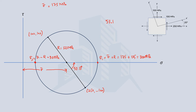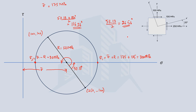The direction of the major principal plane is half the angle shown on the Mohr circle, since angles on the Mohr circle are 2 times the actual angles. So the actual angle is 53.13 / 2 = 26.56 degrees. For the minor principal plane, the angle on the Mohr circle is 53.13 + 180 = 233.13 degrees, giving an actual angle of 116.56 degrees. These match the values obtained from the analytical method in the previous video.